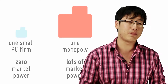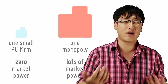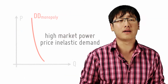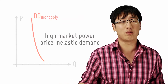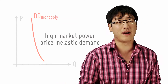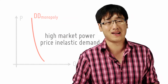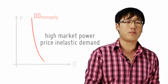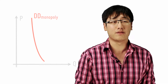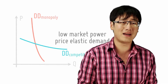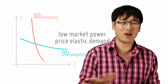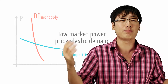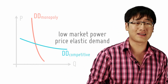A firm with high market power also has a very highly price inelastic demand curve. For example, a monopoly — we have no choice but to buy things from that monopoly, there are no substitutes. Compared to a firm which is perfectly competitive, there are so many substitutes all over the place, so its demand curve is hence highly price elastic.